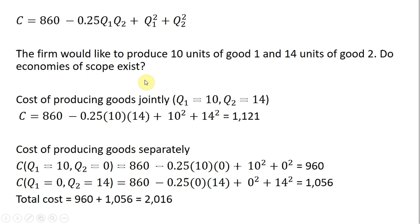Let's first look at the cost of producing these goods together jointly, perhaps in one factory. Plugging in for Q subscript 1 10, plugging in for Q subscript 2 14, and evaluating the cost function, we get a total cost of $1,121.